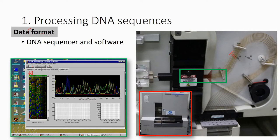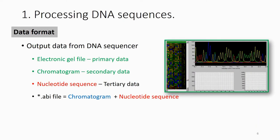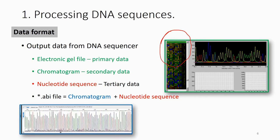Of course, if you use a slightly different machine, the output will be slightly different and the file format will be slightly different. What you have is the electronic gel file, which is the primary data — exactly what is captured in the capillary. After that, you have the chromatogram. They name it electronic because it is essentially an image.